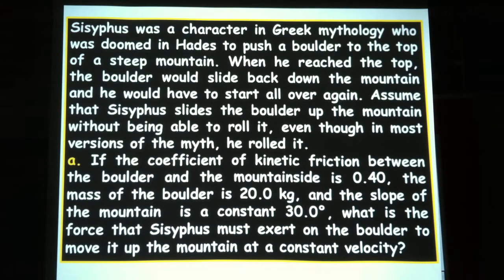First part: if the coefficient of kinetic friction between the boulder and the mountainside is 0.4, the mass of the boulder is 20 kilograms, and the slope of the mountain is a constant 30 degrees, what is the force that Sisyphus must exert on the boulder to move it up the mountain at a constant velocity?